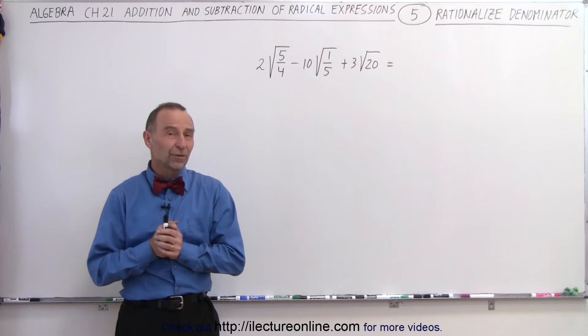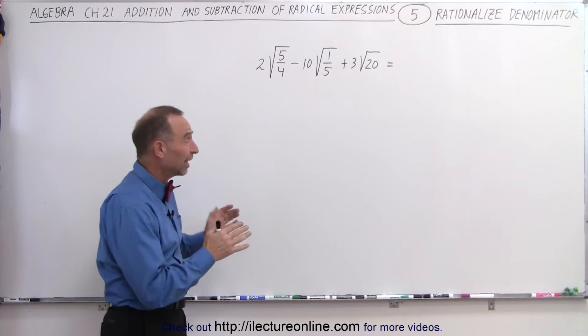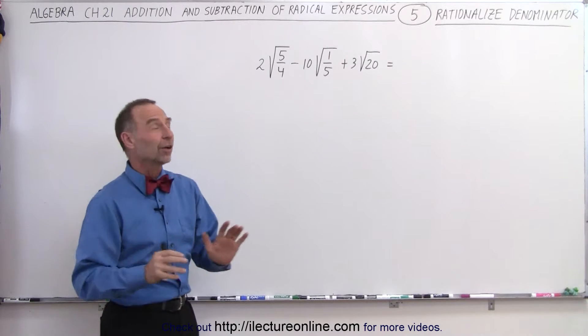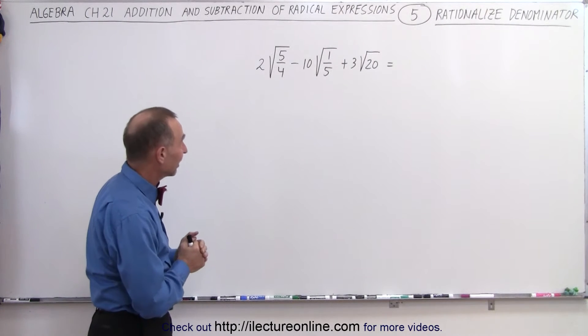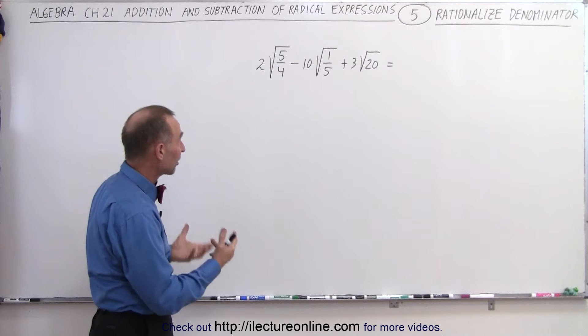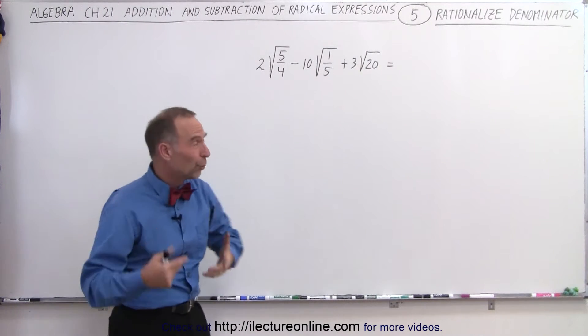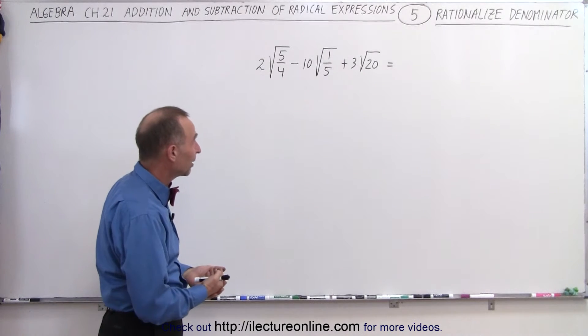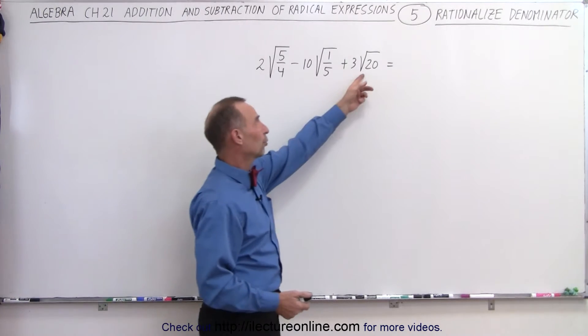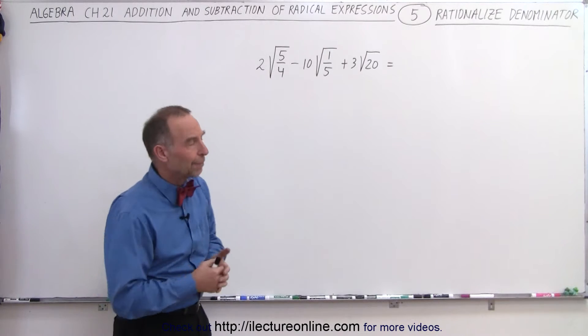Welcome to our lecture online. Sometimes you get an expression that doesn't look like you can simplify it at all, especially when it looks like this. We have radicals with fractions inside of them, and then here you can see that on the bottom we have a 5. There's no way you can take the square root of 5. And here you have the square root of 20 in the numerator. What do you do with that?